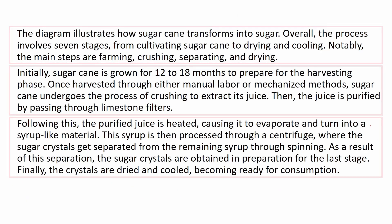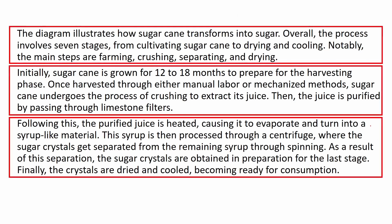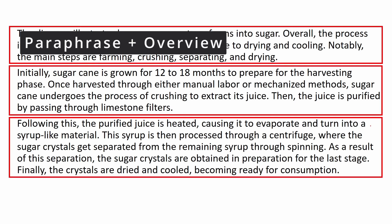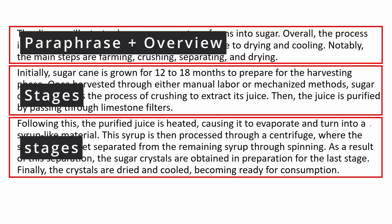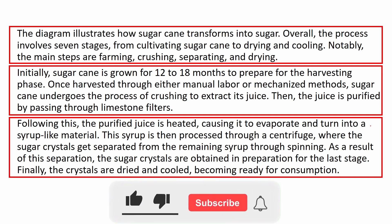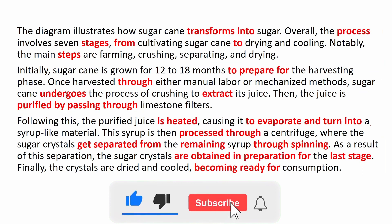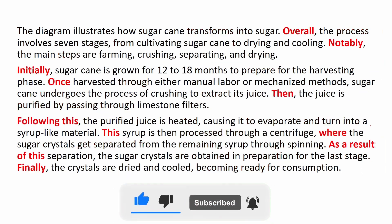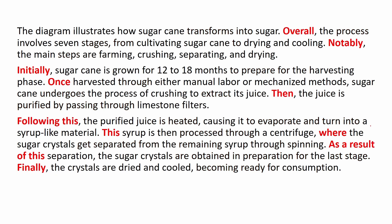I organized my answer in three paragraphs. In the first one, I simply paraphrased the statement and wrote the overview. Then I described the process in the second and third paragraphs, starting from the beginning to the end of the process. In doing so, I wrote 144 words. Remember, as long as you cover all the main points and all the steps, you shouldn't be worried about the word count. You can also see the words I used to describe these stages and the words used to connect sentences, including sequencers like 'once,' 'then,' 'where,' and so on.